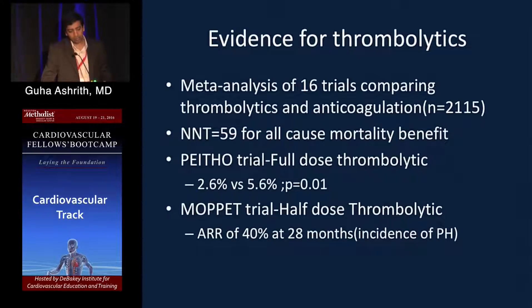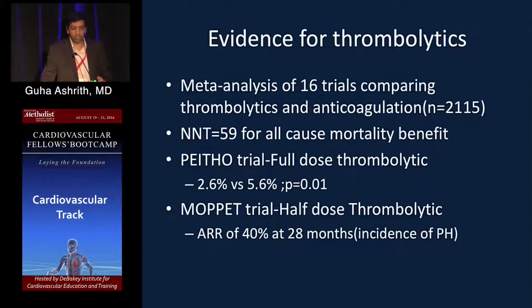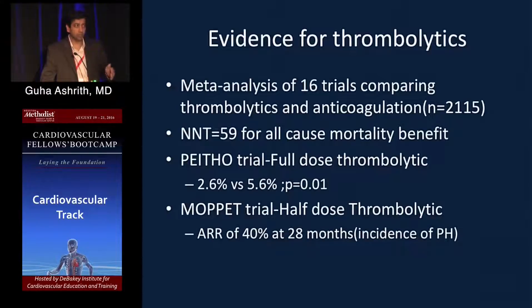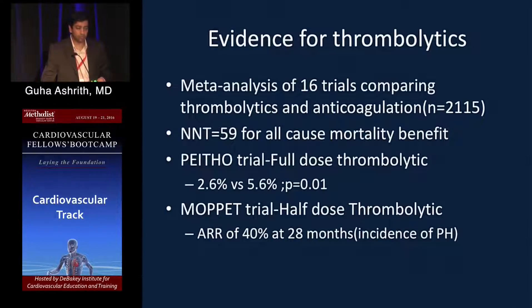A meta-analysis of 16 trials comparing thrombolytics plus anticoagulation versus anticoagulation alone showed a number needed to treat of 59 for all-cause mortality benefit. No single trial showed mortality benefit alone, but combining death with hemodynamic compromise showed statistical significance. The two largest contributors were the PEITHO and MOPPET trials.